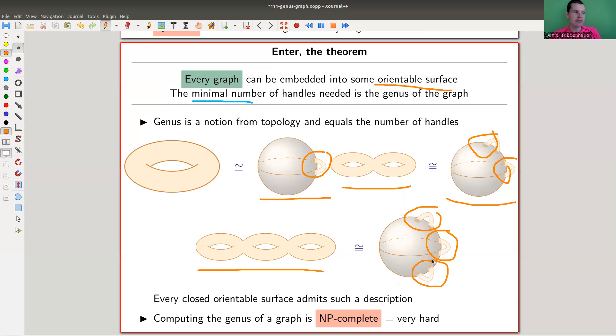The sphere is the one with zero handles, genus zero. The planar graphs are genus zero graphs. Everything that goes on a torus but not on the plane has genus one. Everything that goes on a double torus but not on a torus or plane has genus two, and so on. You literally just count the number of handles.